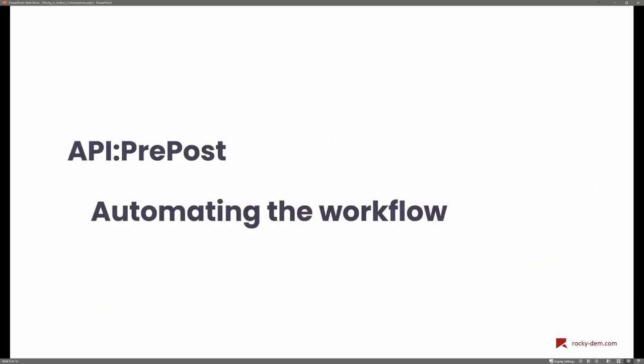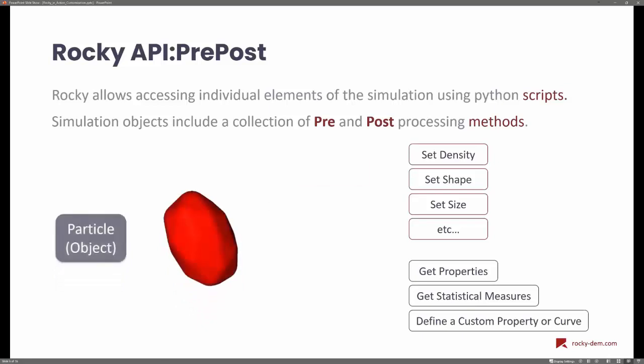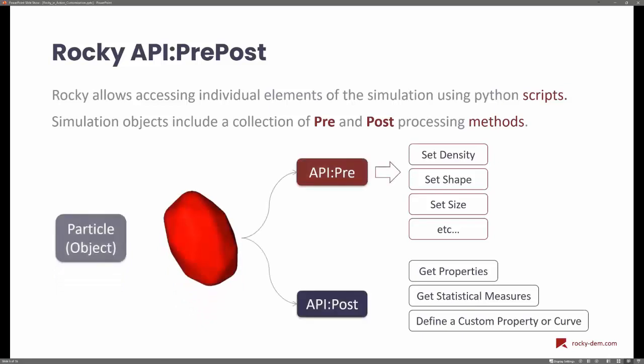Let's look at an example of the API pre-post used for automating the workflow. For each object in a DEM simulation — for example, a particle — you have a set of methods and functions to do preprocessing through Python. For example, you can set the density for the material of the particle, set the shape to be used for the calculation, set the particle size distribution — these are all part of the preprocessing.